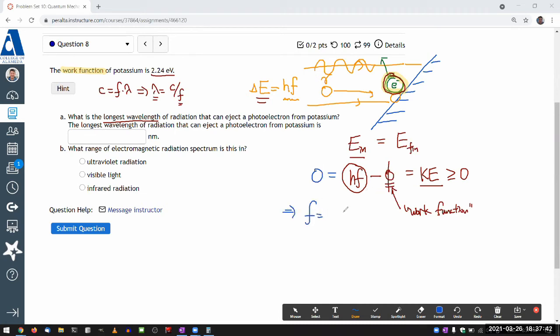Frequency is work function divided by Planck's constant. And I can put this into the expression for wavelength. So this would be the minimum frequency of photon needed.